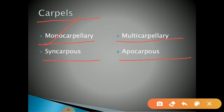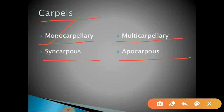Second type is multicarpillary — gynaecium consists of many carpels, that is known as multicarpillary. Next, syncarpus — if the carpels are united in nature, such a carpel we can call as syncarpus. And last one is apocarpus — if the carpels are free in nature, such a carpel we can call as apocarpus.